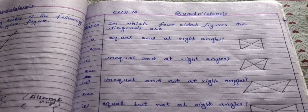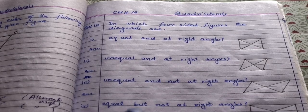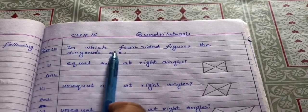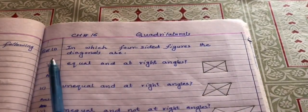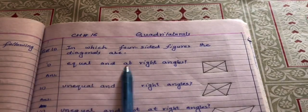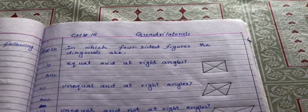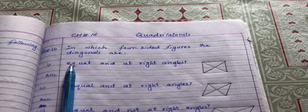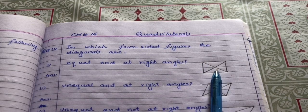We are going to solve question number 10 of exercise 16. The statement of question number 10 is: in which four-sided figures are the diagonals equal and at right angles? We have to find the name of the shape which has equal diagonals at right angles.